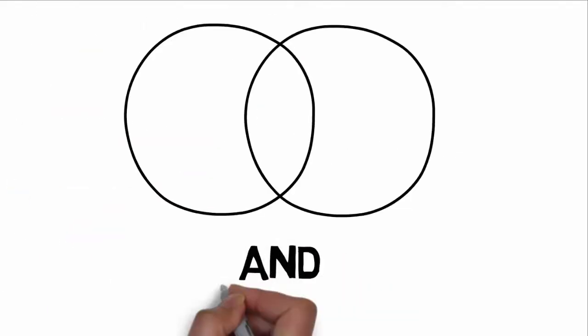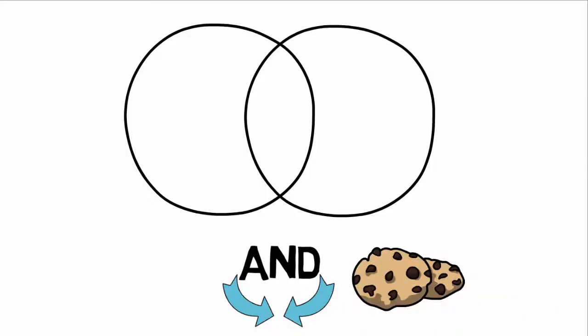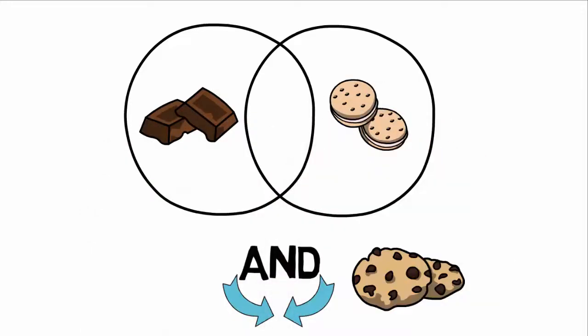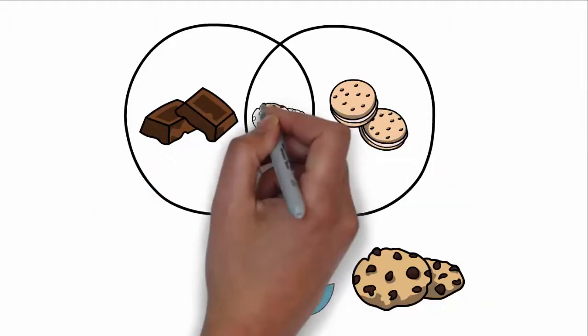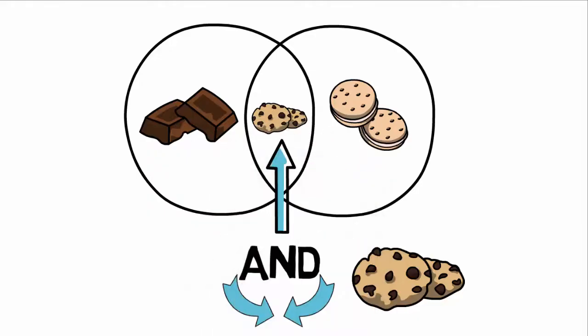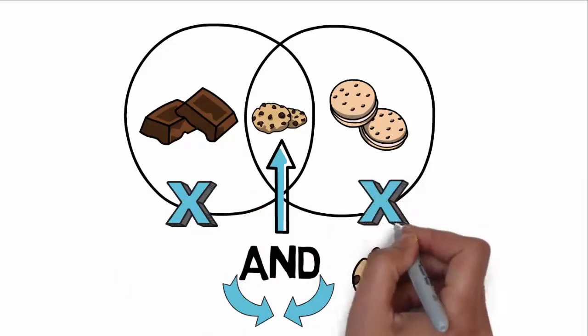AND will search for all terms combined. You can use AND to narrow your search. For example, imagine you want to search for chocolate cookies. If you want chocolate cookies, you can specify chocolate AND cookies. The search will then only show results with chocolate as well as cookies rather than any with just chocolate or just cookies.